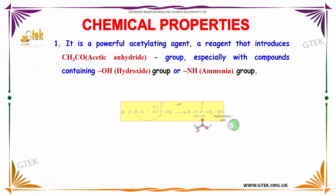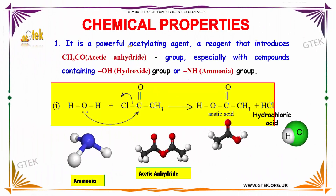Regarding chemical properties, acetyl chloride is a powerful acetylating agent — a reagent that introduces the CH3CO group. It reacts especially with compounds containing a hydroxyl (OH) group or an amino group, producing acetic acid along with hydrochloric acid as a byproduct.